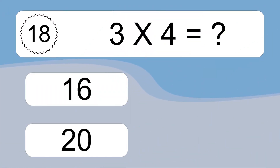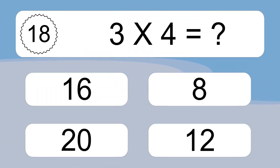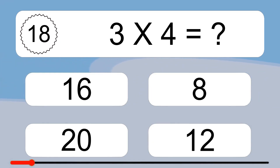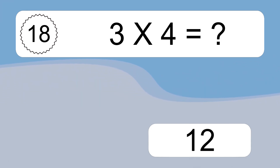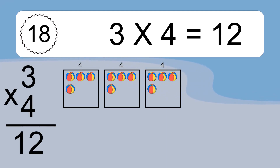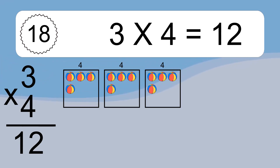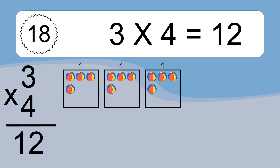3 times 4 equals what? 3 times 4 equals 12. We have 3 boxes, and each box has 4 colorful balls inside. If you count all the balls in all the boxes together, you will have 3 times 4 balls. This equals 12 balls.